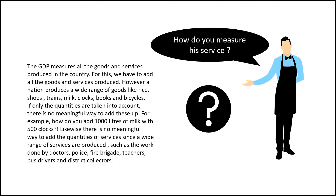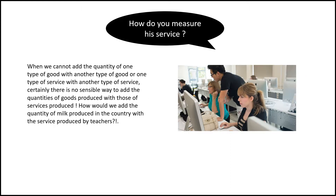How do we measure the GDP? We cannot go to every individual place and count. That's difficult. For services — how do we calculate what a doctor contributes? Or a teacher? Or the police? It's very difficult. We cannot add the quantity of one type of good with another type of good, or one service with another. So instead, we use market price — how much they are sold for in the market — to calculate GDP.